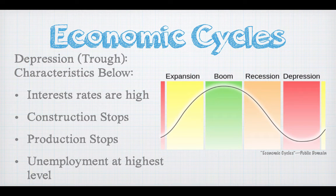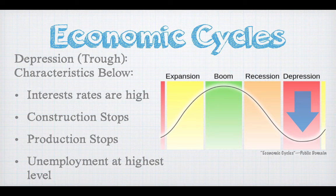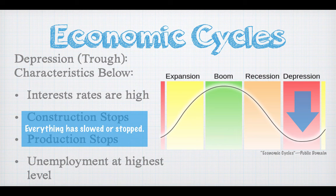Depression characteristics: interest rates are high, it's really hard to get money, and if you can get money, it may not be the most economical thing to do. Construction all but stops — you might see some government-sponsored projects to keep people working, but you definitely see a decrease in construction. Production pretty much stops. If you were working 40 hours a week and your hours were cut, in a depression you're probably working 20 hours, maybe even 15, or you've just been laid off. We're going to see our highest levels of unemployment. The good news is, as soon as that depression is over, we're going to start the next expansion period and our economy is going to rebound. Even though we are in that depression, the economy will rebound — we're starting to see that rebound from the Great Recession of 2007–2008, as unemployment numbers go down and we see growth in our economy. Everything stops or slows in a depression — that's important to remember.